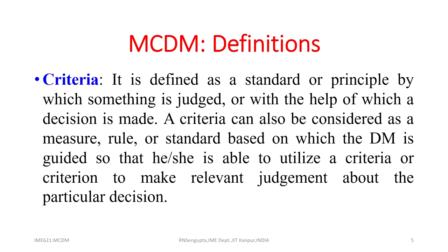The second definition is criteria, defined as a standard or principle by which something is judged or with the help of which a decision is made. For buying a house, criteria can include the locality, safety features, whether it is in a gated community, whether friends and relatives are nearby, how far the school, college, shopping center, hospital, or recreation facilities like parks and malls are.